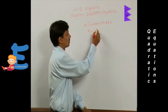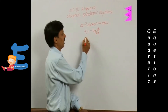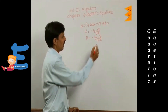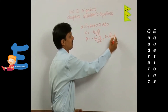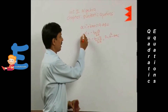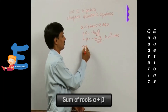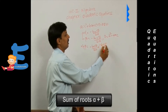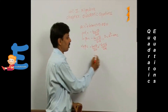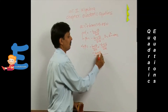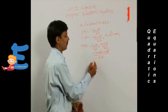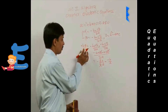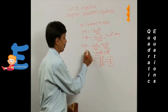The first root alpha equals minus b plus root D upon 2a, and the second root beta equals minus b minus root D upon 2a, where D is b² - 4ac, the discriminant. The sum of roots alpha plus beta equals (minus b + root D)/2a + (minus b - root D)/2a, which gives minus 2b upon 2a, so sum of roots equals minus b upon a.